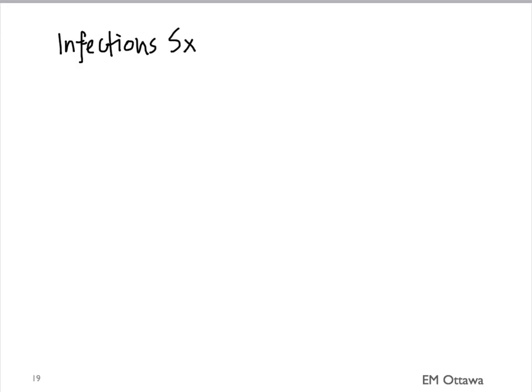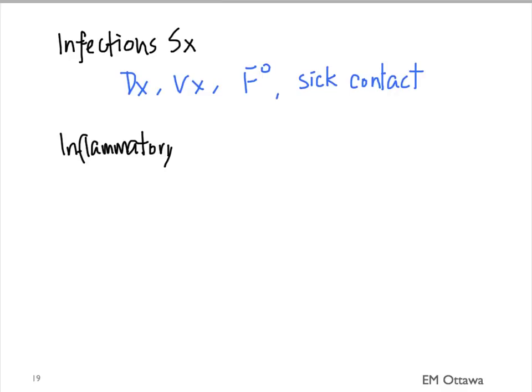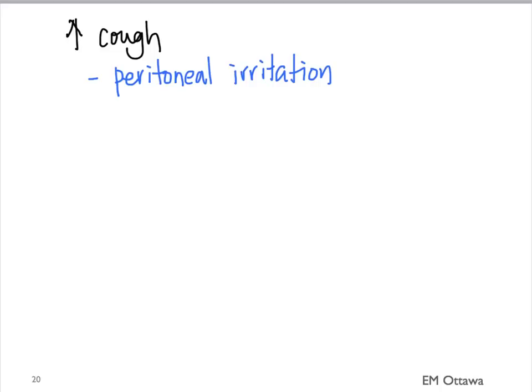The next part of the history is associated symptoms. Infectious conditions can have symptoms such as vomiting, diarrhea, and fever, and the patient may also have a sick contact history. Inflammatory conditions can be associated with fever, and the patient might also give a previous diagnosis of inflammatory disease. For obstruction in the GI tract, we will see vomiting and decreased flatus. Pain that is worse with movement or cough suggests peritoneal irritation. Other associated symptoms such as hematuria and dysuria suggest a urological cause, while vaginal bleeding or discharge suggests a gynecological cause.